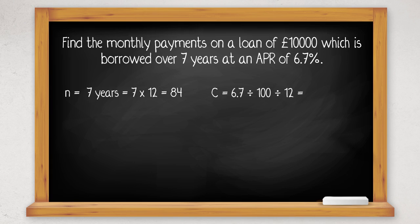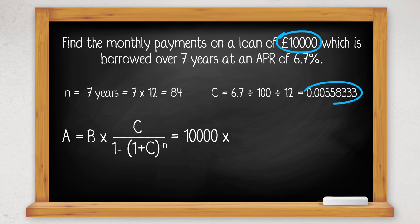That works out at 0.00558333. So let's write down the formula. A equals B times C divided by 1 minus 1 plus C to the minus n. B is the amount we have borrowed, which is £10,000. We just worked out C, 0.00558333, divided by 1 minus 1 plus 0.00558333 to the minus 84.